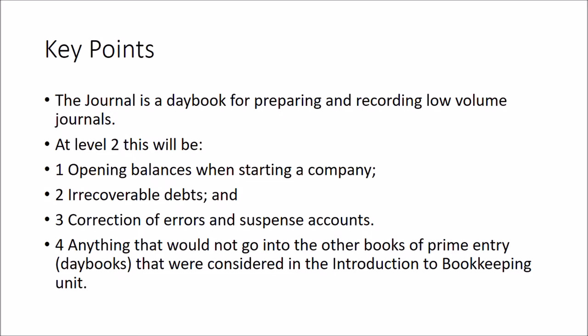At Level 2, there are three different types of journals that can go into the journal: opening balances when starting the company, irrecoverable debts, and correction of errors and suspense accounts.